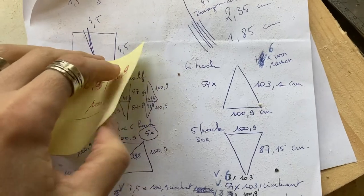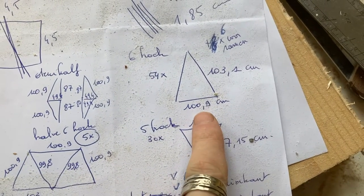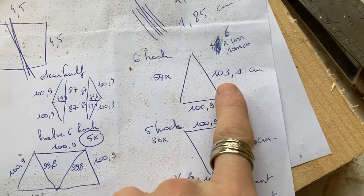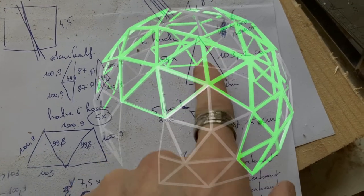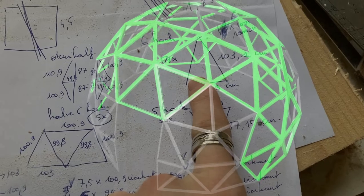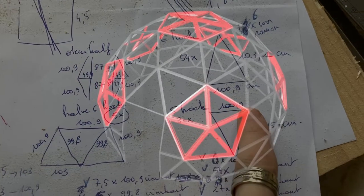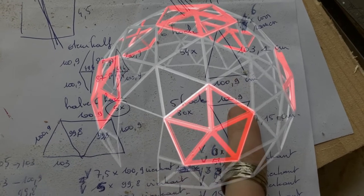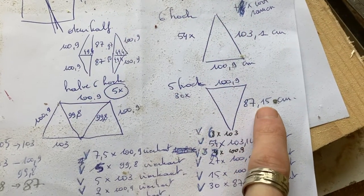So these are the parts I need: the hexagon - 100.9, 100.3, 103.1, this is the same, 103.1. The pentagon - 100.9, same length of strut as the hexagon, and then 87.15.